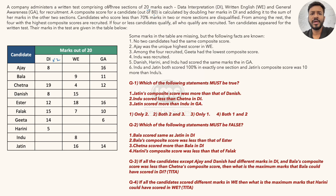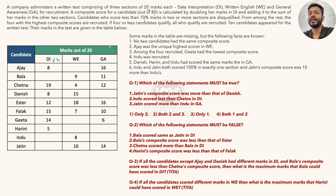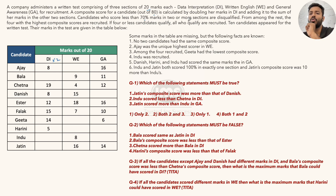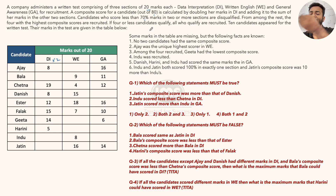Candidates who score less than 70% marks in two or more sections are disqualified. 70% of 20 is 14, so any candidate who scores less than 14 in two or more sections will be disqualified. Note that 14 itself is acceptable — it has to be less than 14 in two or more sections to be disqualified.